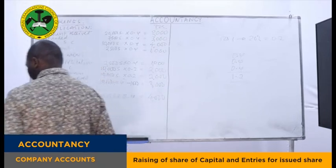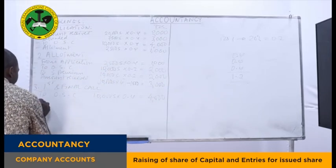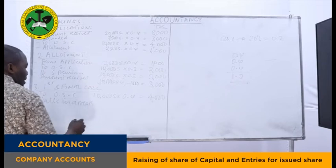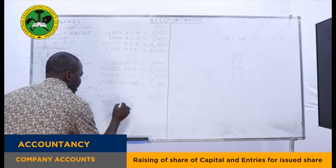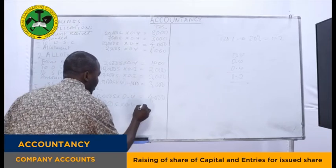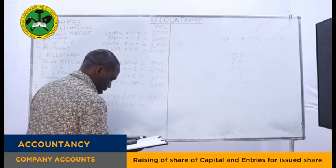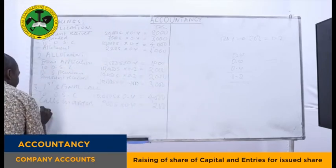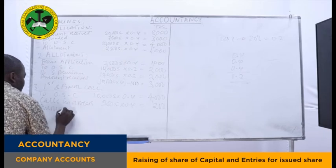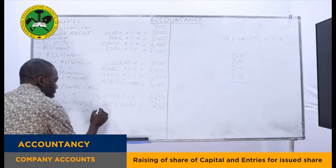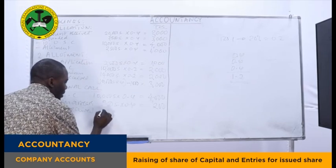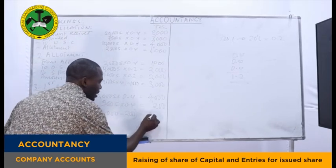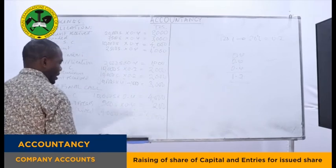Calls in arrear at this stage: 500 shares × 0.4 = TZS 200. So the amount received on the first and final call will be TZS 4,000 less TZS 200 in arrear = TZS 3,800.